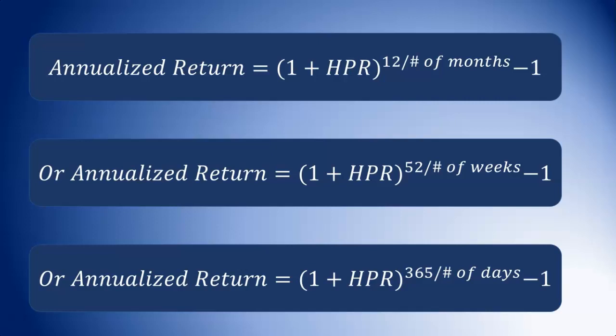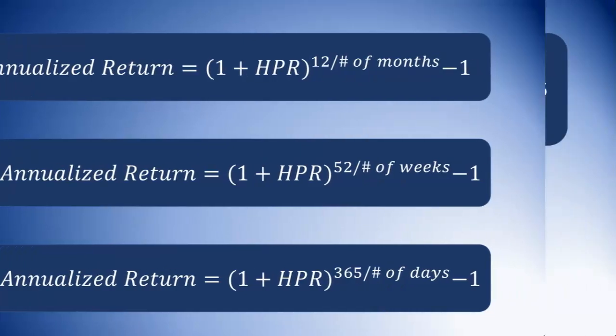If it was days, it would be 365 divided by the number of days. So it's a one-year period: either 12 months for the year, 52 weeks for the year, or 365 days for the year — divided by the number of months, weeks, or days that we are dealing with. And it's important to remember to subtract 1 at the end.